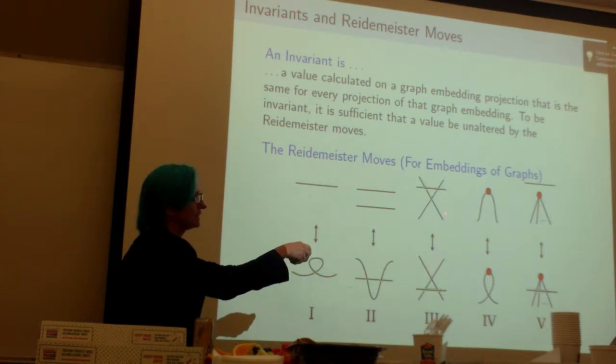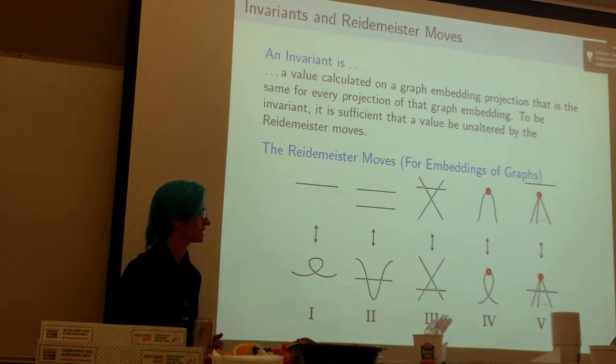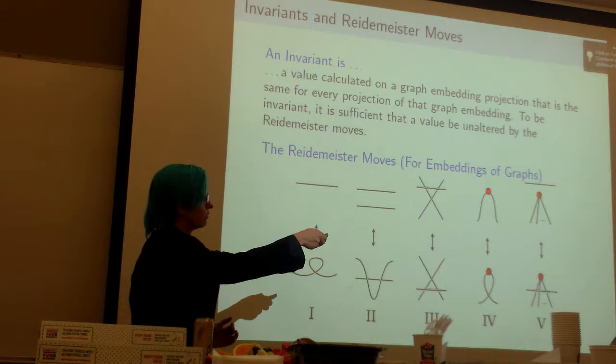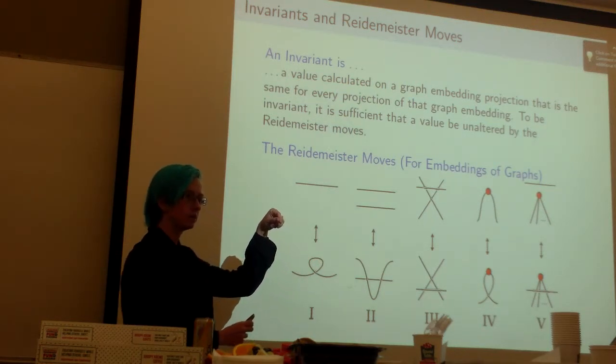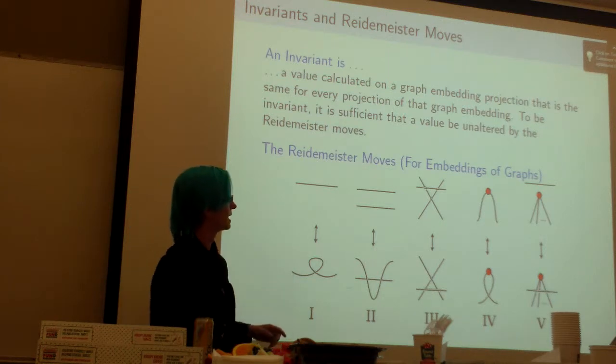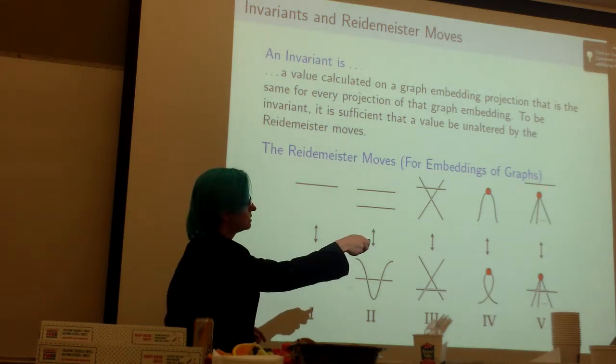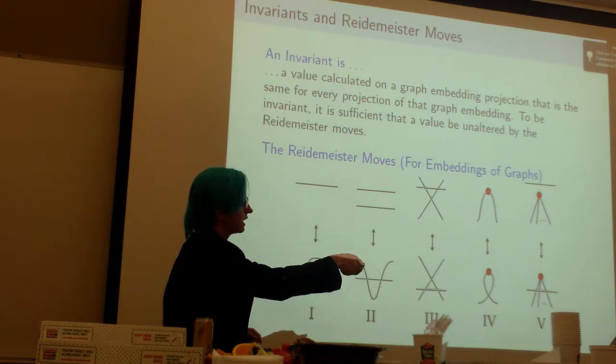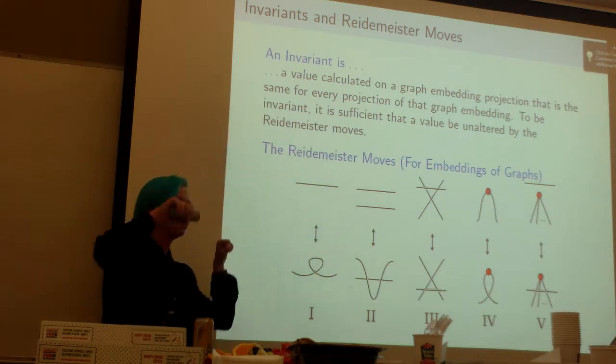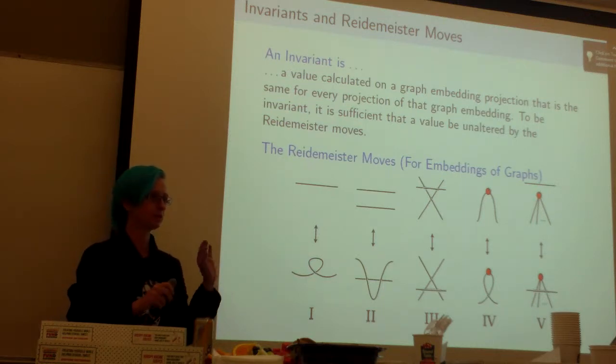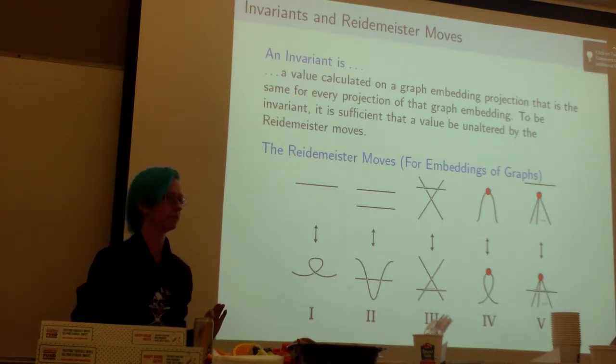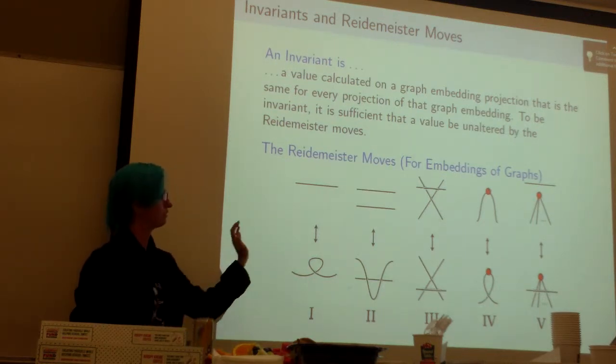When you start working with graph embeddings you have to add these other two over here to handle the things you can do with all the vertices. You have to have one for what if you just twist it up right at the same vertex, so that's Reidemeister move four. And you have to have one for what if you took an edge and you moved it over a vertex, you just pull it over the top, so that's Reidemeister move five.